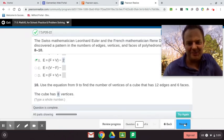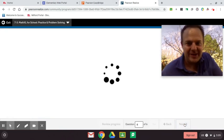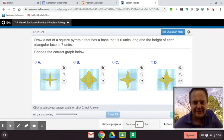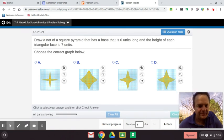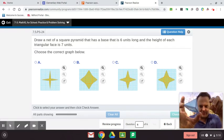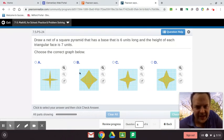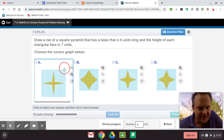That was probably the problem you were needing some help on and I'm happy to help. Let's take a look here, guys. What do you think? Draw a net of a square pyramid. Let me just show you that. This is a square pyramid. Draw a net of a square pyramid that has a base that is six units long and the height of each triangular face is seven units.